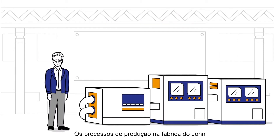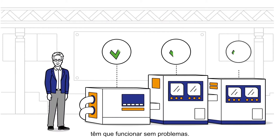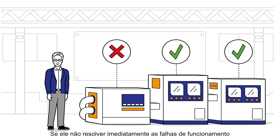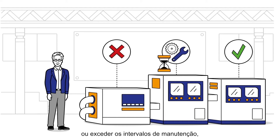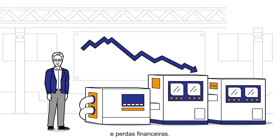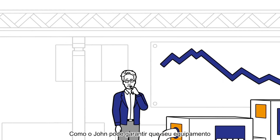The production processes at John's company have to run smoothly. If he fails to address malfunctions immediately or exceeds maintenance intervals, he risks production downtimes and financial losses. How can John ensure that his equipment is always in perfect working order?